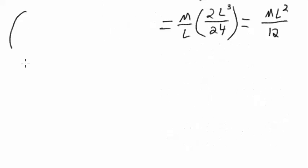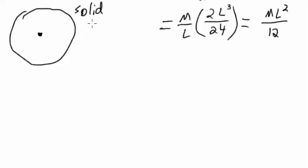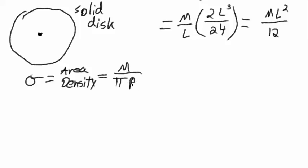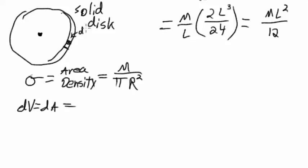For our next example, I'm going to do a disk rotating around its center — a solid disk. This time sigma is equal to the area density of the thing, which is going to be the mass divided by pi times the radius squared. Our differential area element is going to be made by imagining a tiny little chunk with width dR and height R d-phi.